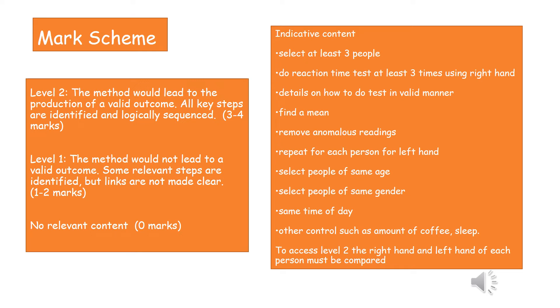This is some of the content that you needed to include. You need to select at least three people, do a reaction time test at least three times using the right hand, details on how to do the test in a valid manner, find a mean, remove any anomalous results, and then repeat the test for each person using their left hand.